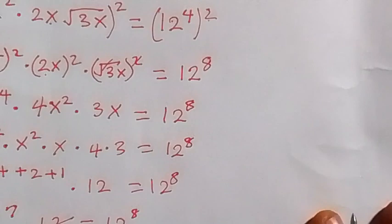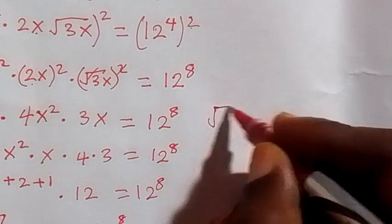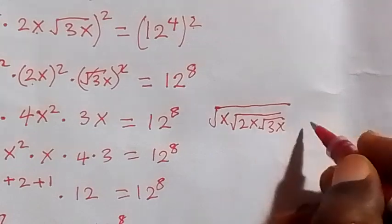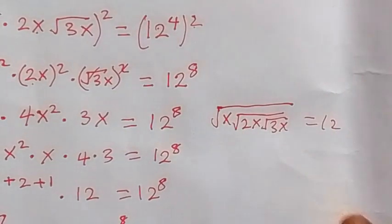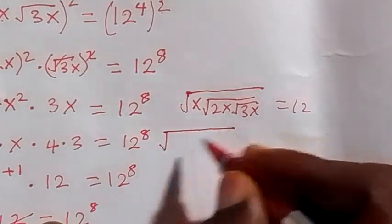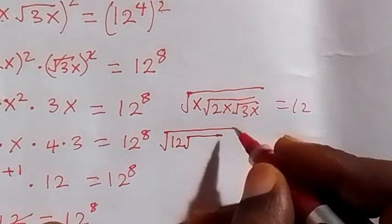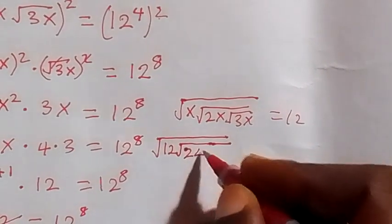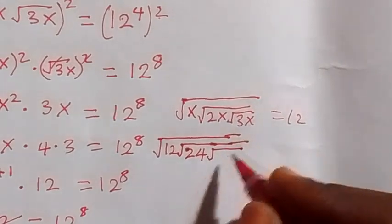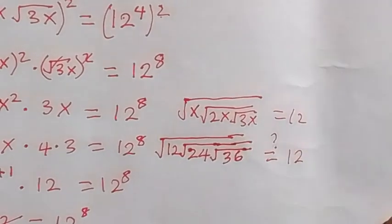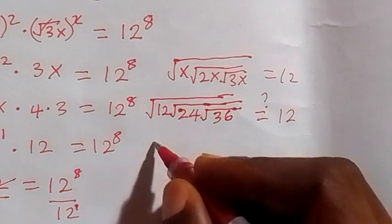Now let's check if x equals 12 satisfies our original problem. From what we are given, we have the square root of x times the square root of 2x times the square root of 3x, equals 12. Substituting x equals 12, we get the square root of 12 times the square root of 24 times the square root of 36, equals 12.